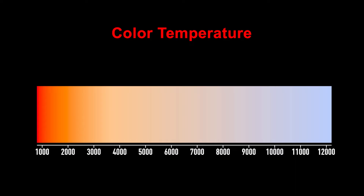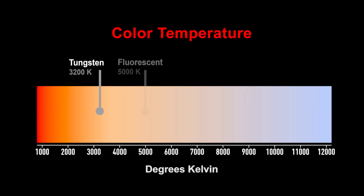Color temperature is a range from red to blue, and it's measured using a scale called the Kelvin scale. For example, tungsten light falls at around 3200 Kelvin. Fluorescent light falls at 5000 Kelvin, and sunlight on a bright summer day at noon with no cloud cover is 5600 Kelvin. But what is Kelvin? In order to understand the Kelvin scale, we need to understand where it came from.